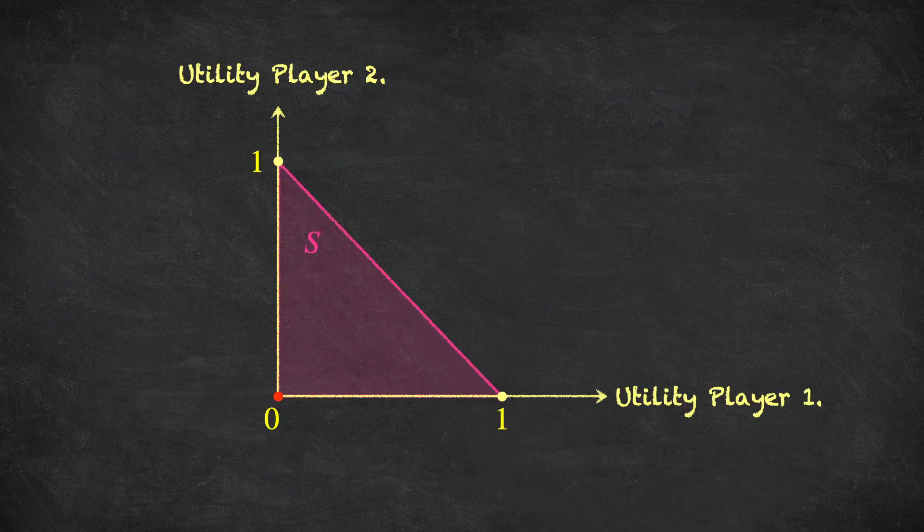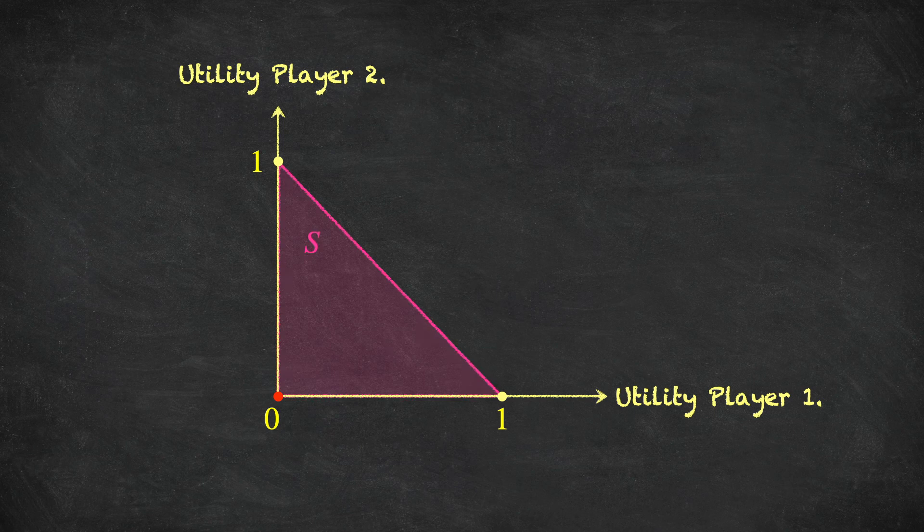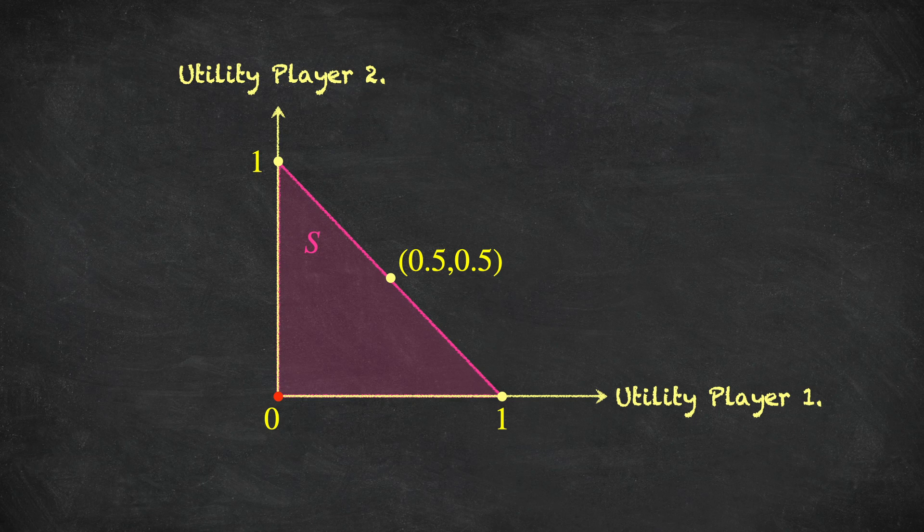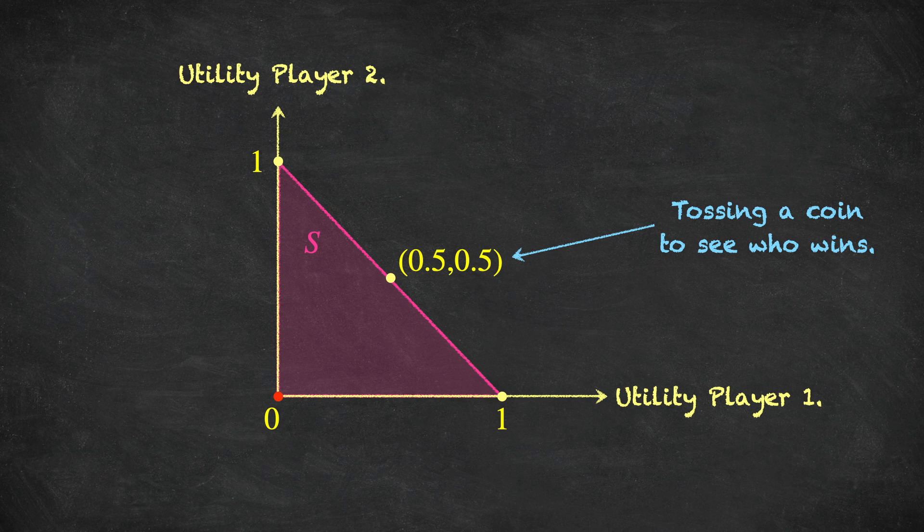Representing this graphically, we arrive at this convex set S, and how do we interpret this? Well, for example, the point where both players receive expected utility 0.5, so this point (0.5, 0.5), would be the case where we are tossing a fair coin to see who wins the painting. Different points along the hypotenuse of this triangular-shaped bargaining set correspond to different probabilities of each player winning the painting, and points inside the triangle correspond to lotteries where there is some probability that nobody ends up with the painting. So, taking the set of all possible lotteries over these three alternatives, and then taking the utility or expected utility image of that set, we arrive at this bargaining set S, a convex set.